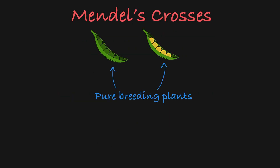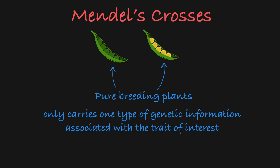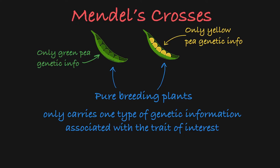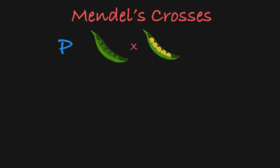He started this process with two different pure-breeding plants. A pure-breeding plant is one that only carries one type of genetic information associated with the trait of interest. So in this case, Mendel started with a pure-breeding plant with yellow peas and a pure-breeding plant with green peas. These two plants are the P generation.